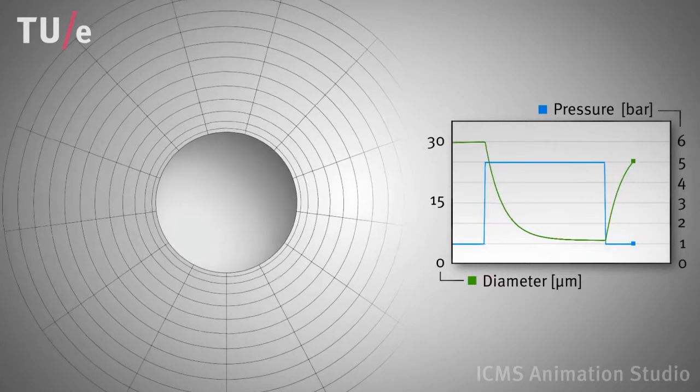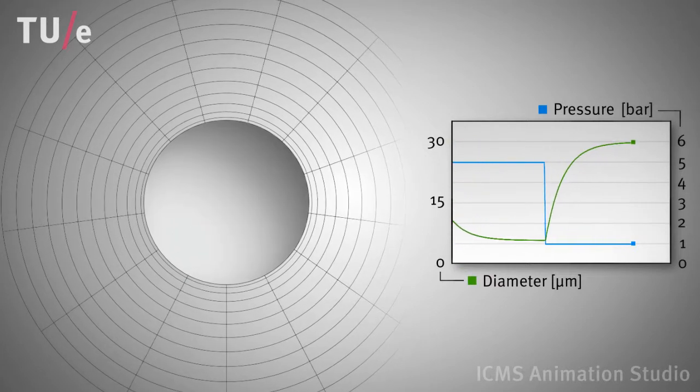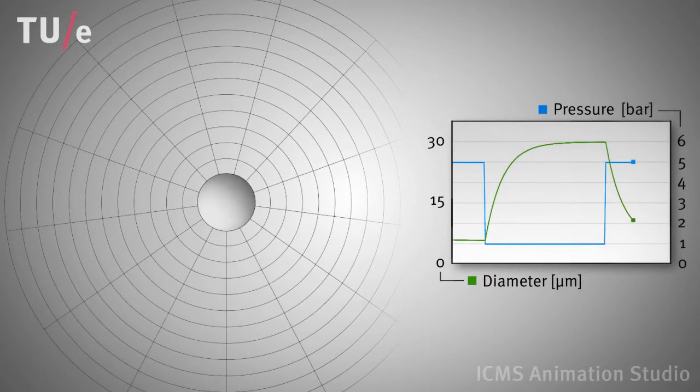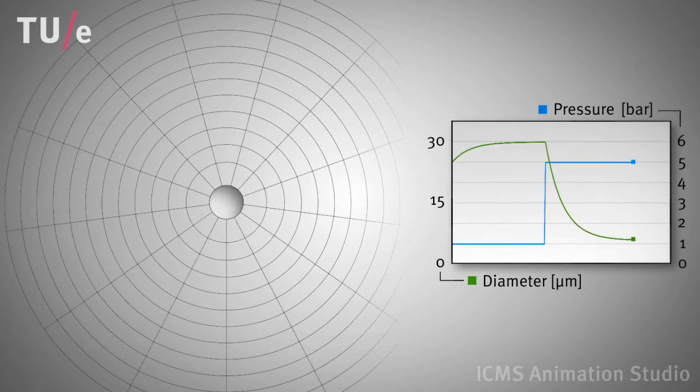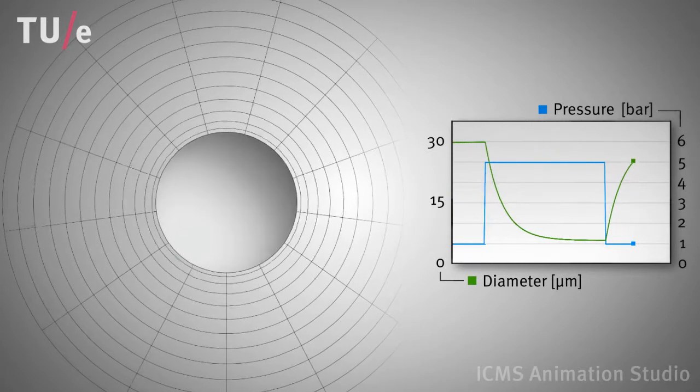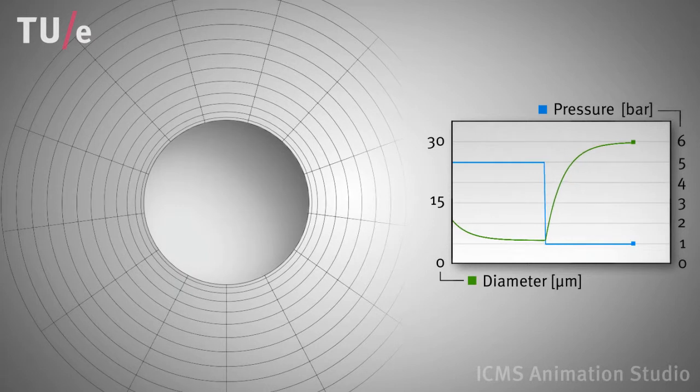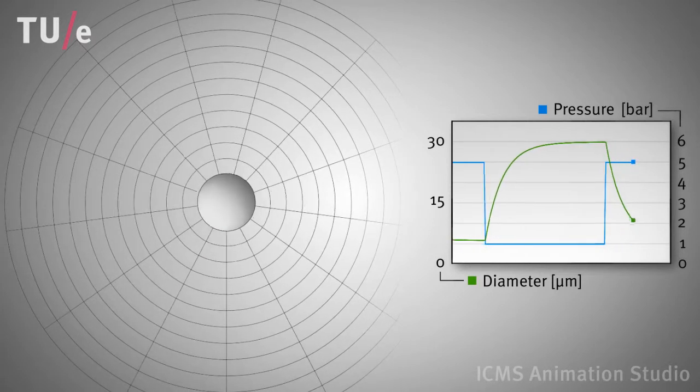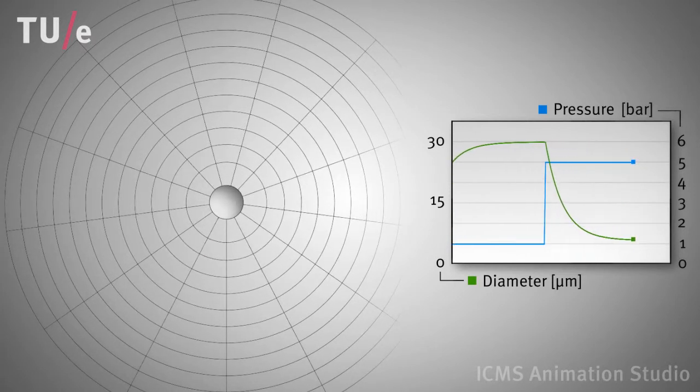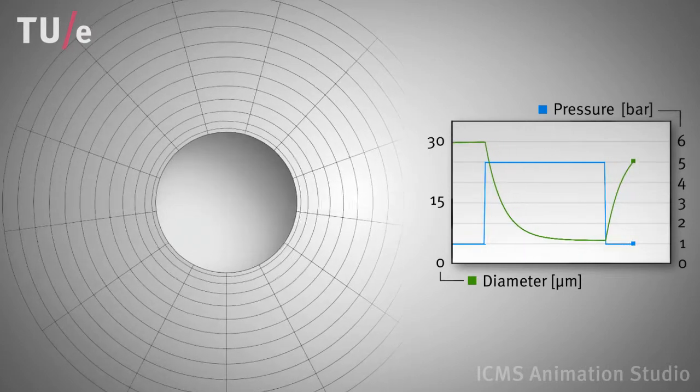The bubble rheometer thus enables us to study the viscoelastic behavior of complex fluids at small length scales. As the main mode of deformation in this experiment is elongational rather than pure shear, the method also offers new possibilities for measuring elongational viscosities. Important in many applications, but currently still difficult to measure accurately.